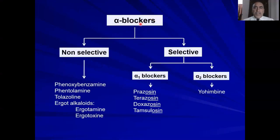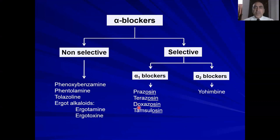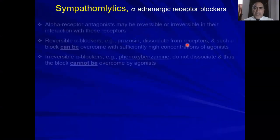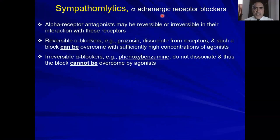The classes of alpha blockers are either non-selective or selective. Non-selective include phenoxybenzamine, phentolamine, tolazoline, and ergot alkaloids. Selective alpha-1 blockers include the prazosin family: prazosin, terazosin, doxazosin, tamsulosin, and others. Alpha-2 blockers include yohimbine. Now let's talk in detail about alpha-adrenergic blockers.